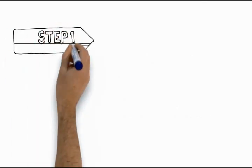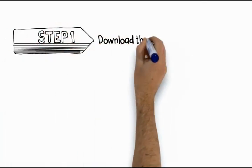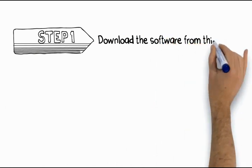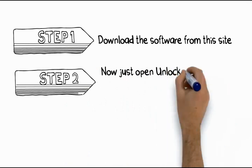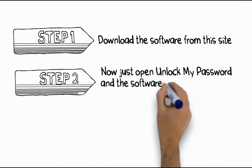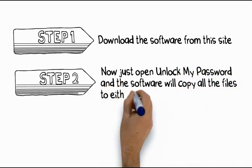Here are the three simple steps. Step 1: Download the software from the site. Step 2: Now, just open Unlock My Password and the software will copy all the files to either a CD or a USB device.